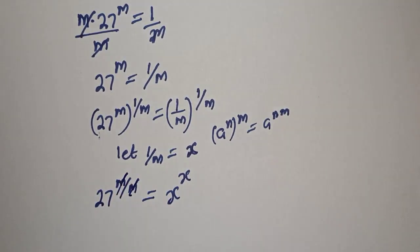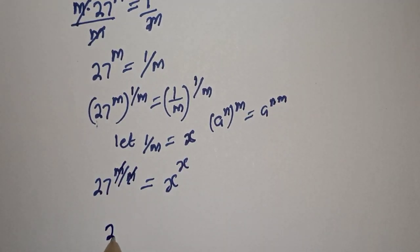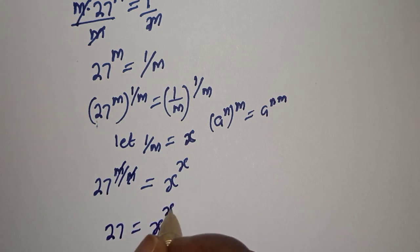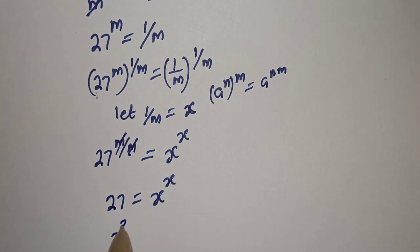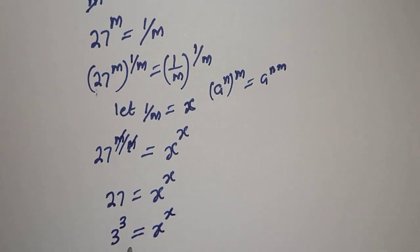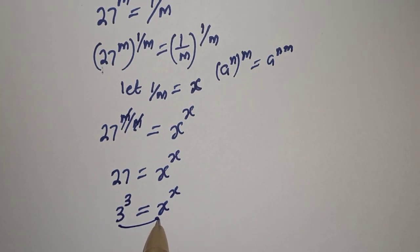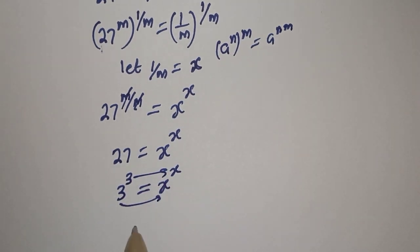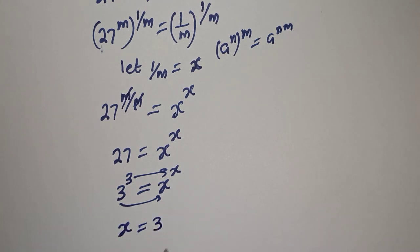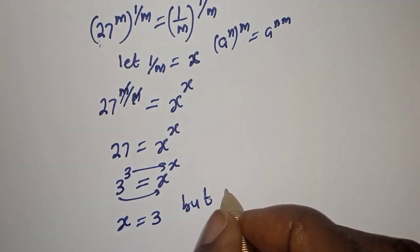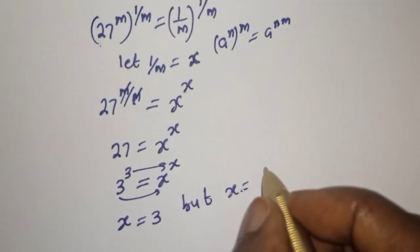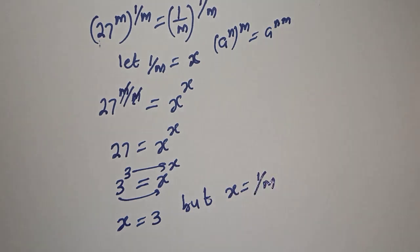The m's cancel, leaving 27 equals s raised to power s. Now 27 is 3 raised to power 3, so 3^3 equals s^s. From here, the base equals s and the exponent equals s, therefore s is equal to 3.